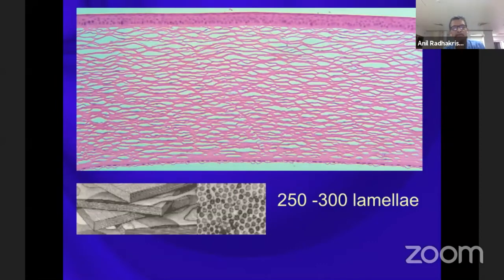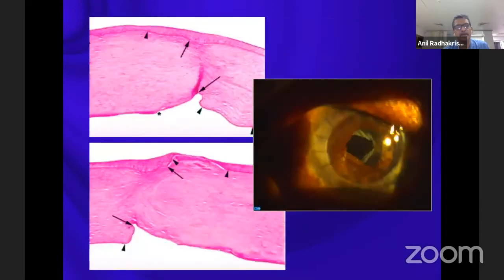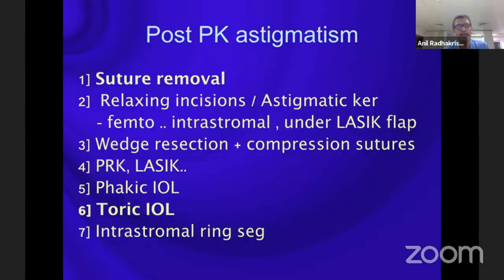If you look at the cornea, it can be envisaged as about 250 to 300 lamellae stacked on top of each other, each lamella made of a collection of fibrils, each fibril carrying about 70 microfibrils. Structurally, the peripheral cornea differs from the central cornea, and the anterior half differs from the posterior half. Adding a full-thickness corneal scar means that most management strategies for astigmatism in a virgin cornea do not apply past a graft-host junction.